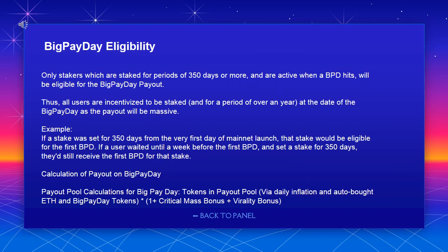Big Pay Day eligibility: only stakers who are staked for periods of 350 days or more and are active when a Big Pay Day (BPD) hits will be eligible for the BPD payout. All users are incentivized to be staked for a period of over a year at the date of their Big Pay Day, as the payout will be massive. For example, if a stake was set for 350 days from the very first day of mainnet launch, that stake would be eligible for the first BPD. If a user waited until a week before the first BPD and set a stake for 350 days, they'd still receive the first BPD for that stake.